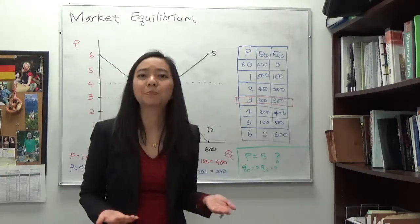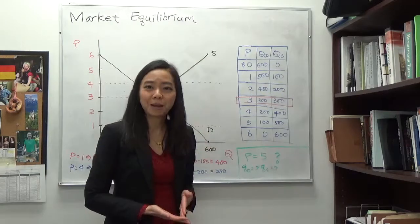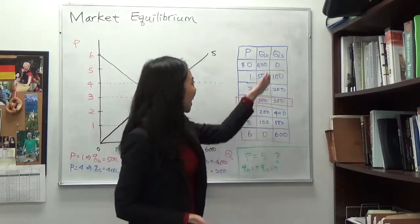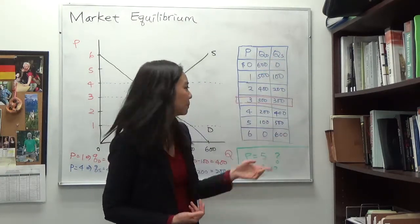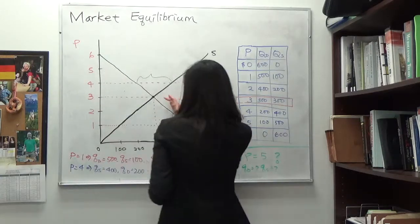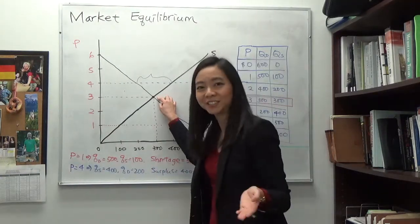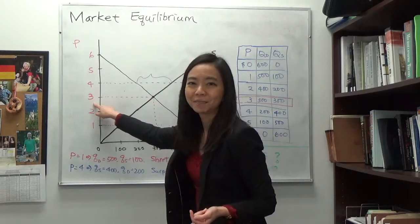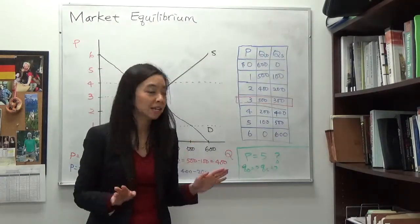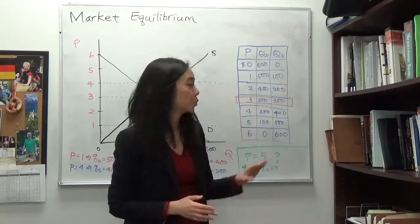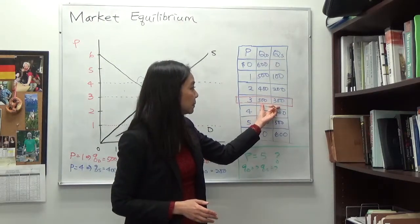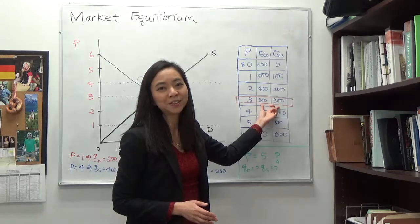So what exactly is market equilibrium price? Here you can see your demand and supply schedule — the price, quantity demanded, and quantity supplied. You can draw the supply and demand curves using this schedule, and after you draw that, notice there is an intersection. At that intersection, the price is three dollars, and three dollars is our equilibrium price. That's the price where you clear the market, meaning quantity demanded equals quantity supplied — there is no shortage and no surplus.